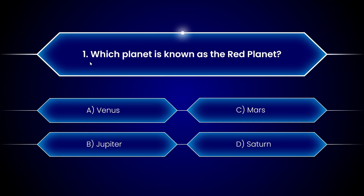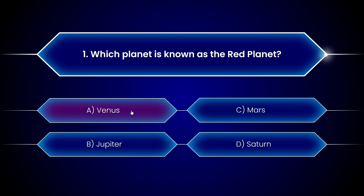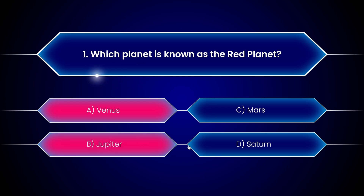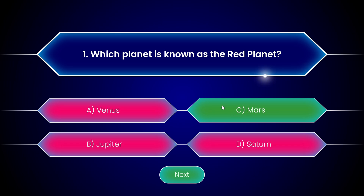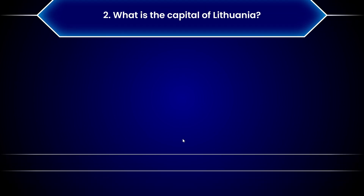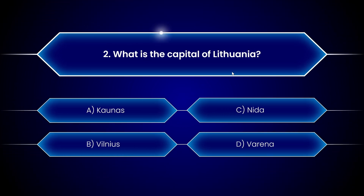Here comes the first question: which planet is known as the red planet? We have four possible answers and only a single one is correct. If we click on a wrong answer, that answer becomes red — Jupiter is wrong, Saturn is wrong. Once we find the correct answer, it becomes green, and we get a button to continue to the next question. You can create as many of these question slides as you wish.